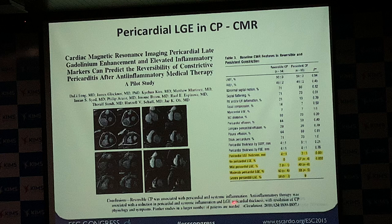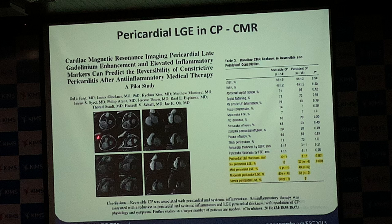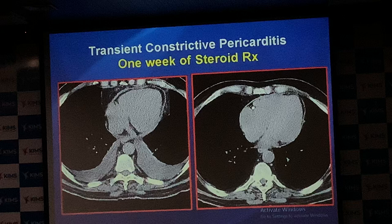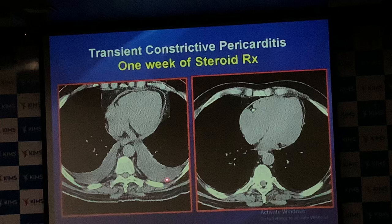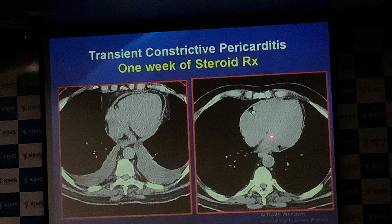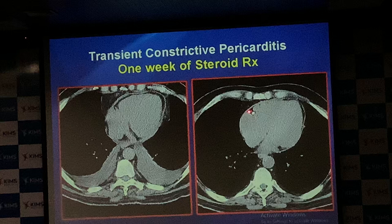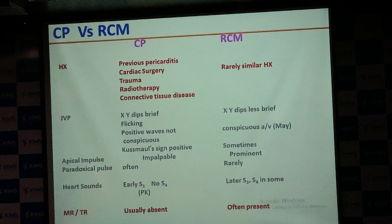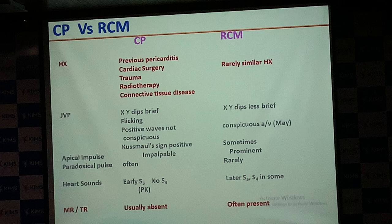On MRI, pericardial inflammation causing reversible constrictive pericarditis is demonstrated by late gadolinium enhancement. The same is seen on PET with uptake of FDG. This is an example showing reversible acute constrictive pericarditis — before steroid treatment and after steroid therapy of six to eight weeks, showing dramatic improvement.